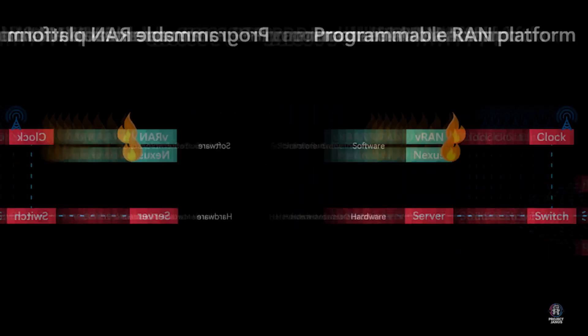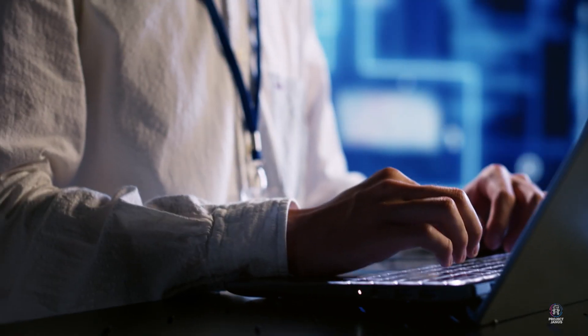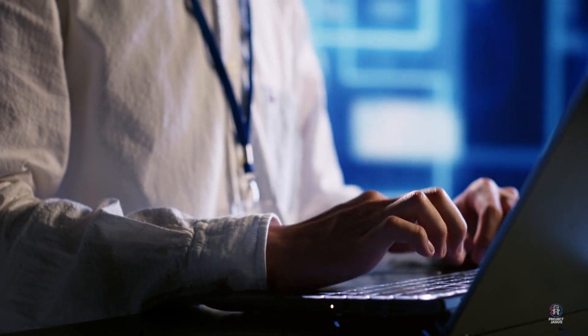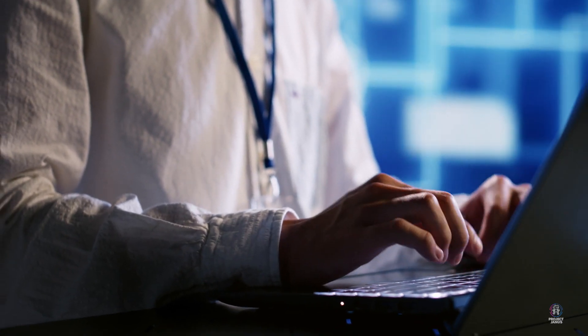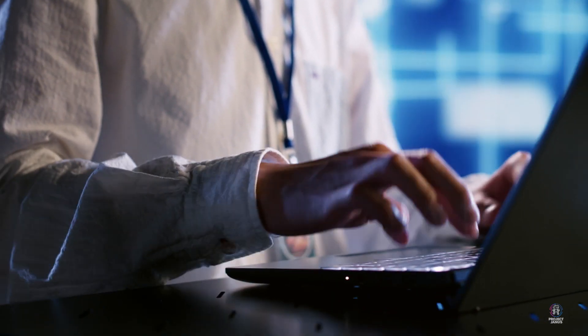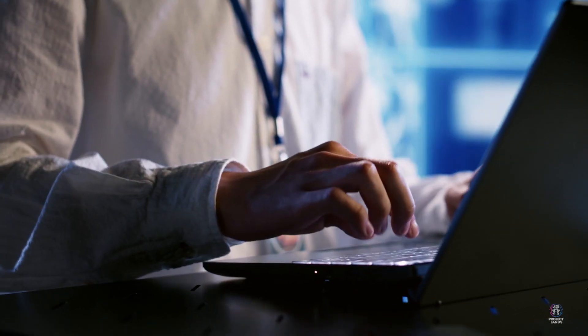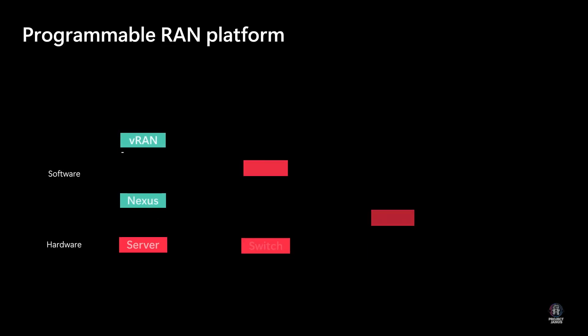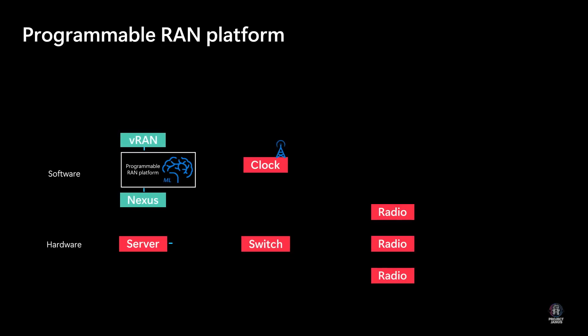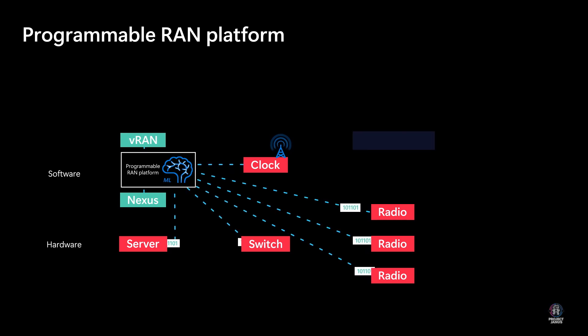Generative AI models now allow us to learn normal behavior and identify deviations proactively, even without prior exposure to issues. This is a game-changer for VRAN operations. We've developed a distributed, unsupervised machine learning model for anomaly detection.